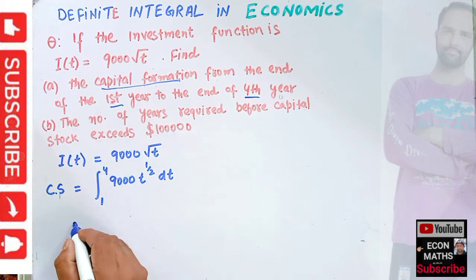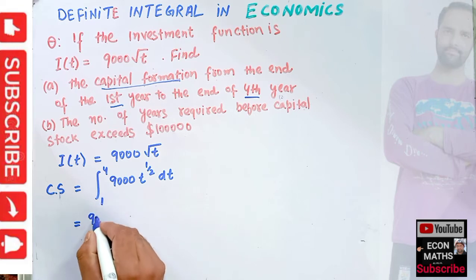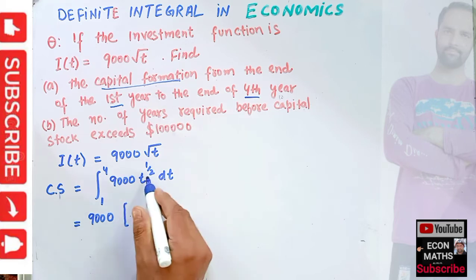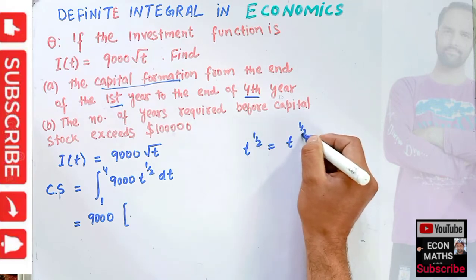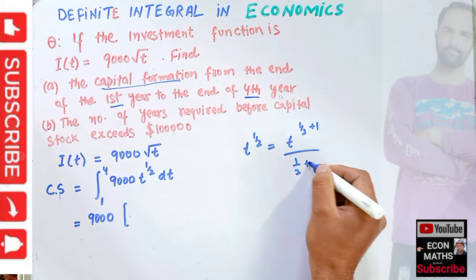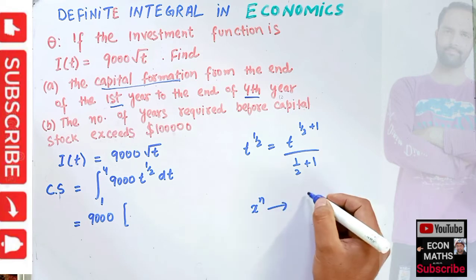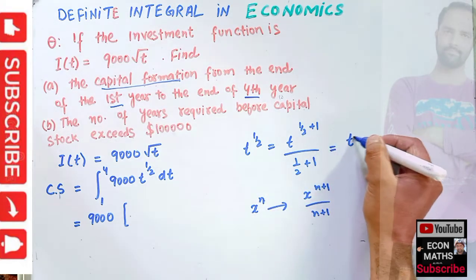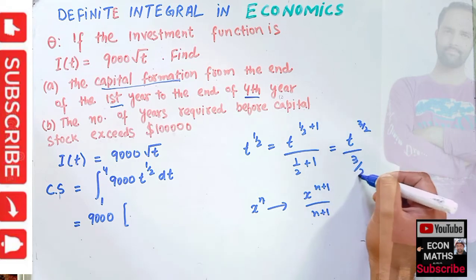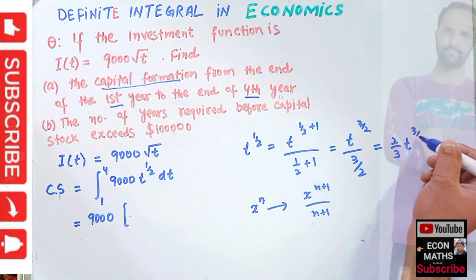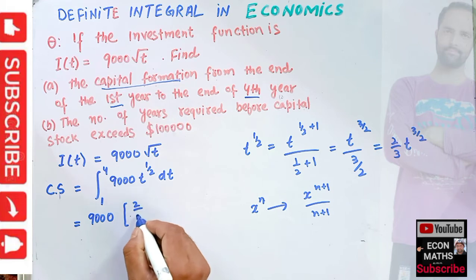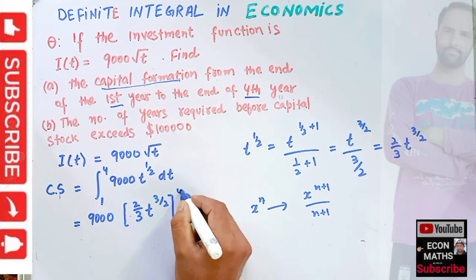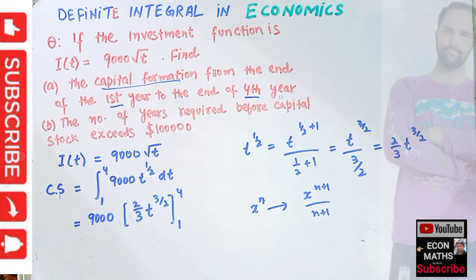Taking the integral is straightforward. We take 9000 outside the integral. The integral of T to the power 1/2 uses the power rule: T to the power n integrates to T to the power (n+1) divided by (n+1). So the integral of T^(1/2) becomes T^(3/2) divided by 3/2, which equals 2/3 times T^(3/2). We evaluate this from year 1 to year 4.